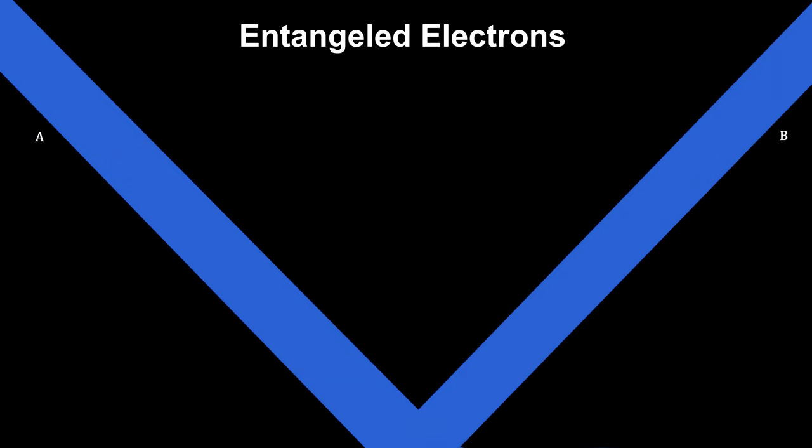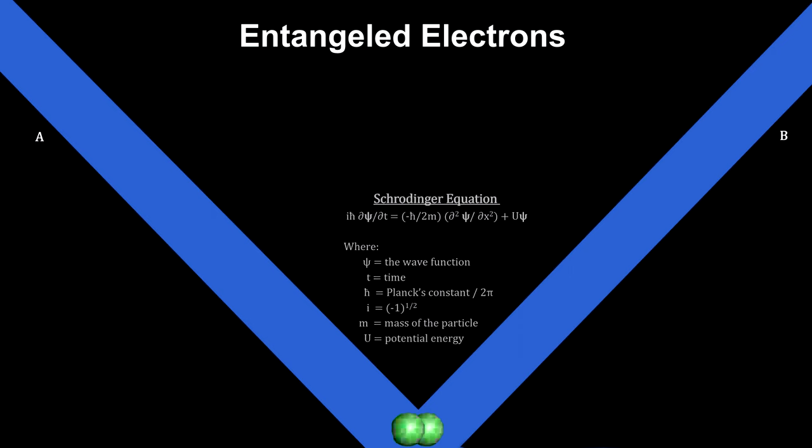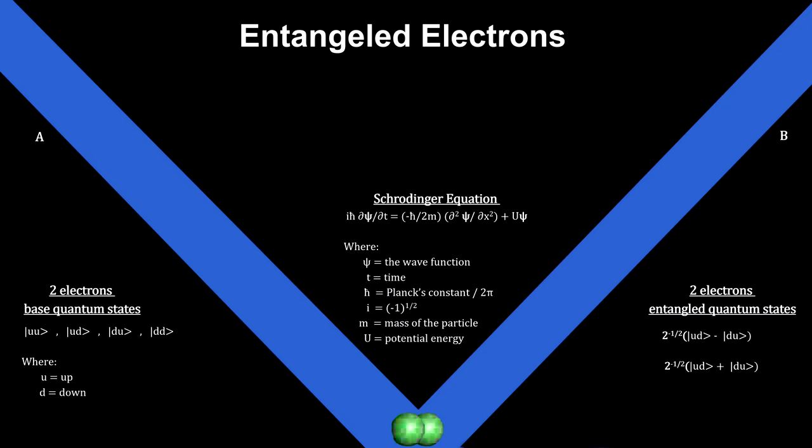For the quantum mechanics view, we will start out with two electrons that have been put together to entangle them. Entangled particles are particles that have their quantum states described by a single wave function.